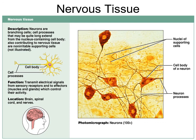Only smooth muscle is not striated. Cardiac muscle is striated and has intercalated discs connecting each cell with many gap junctions, creating an electrical synapse - when one cell contracts, they all do.